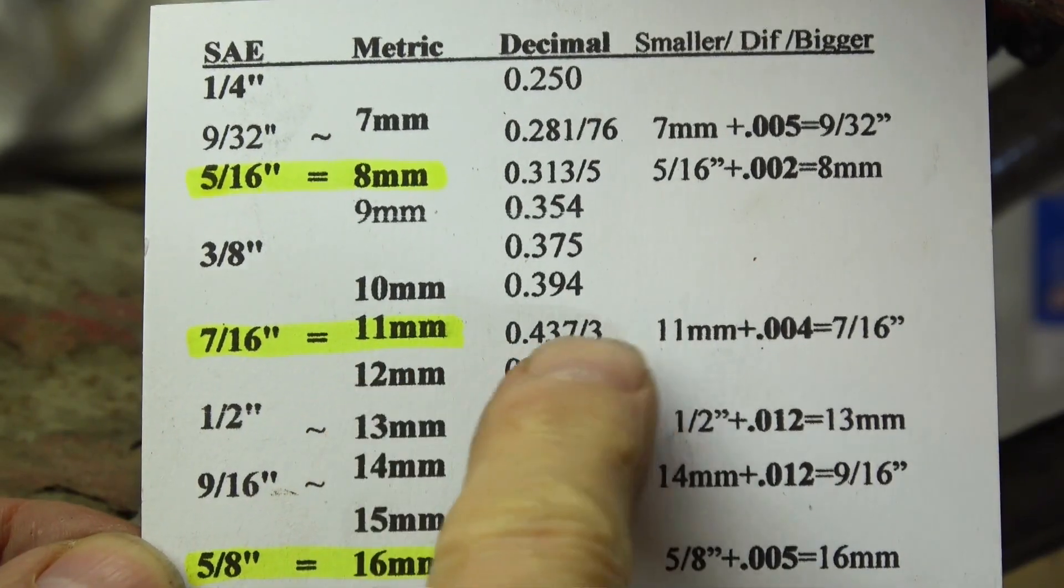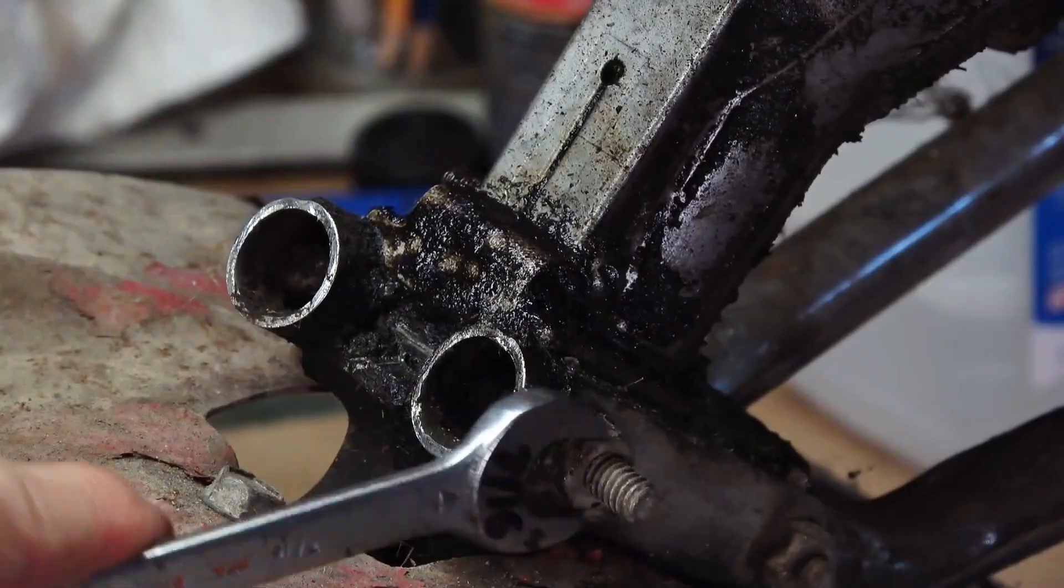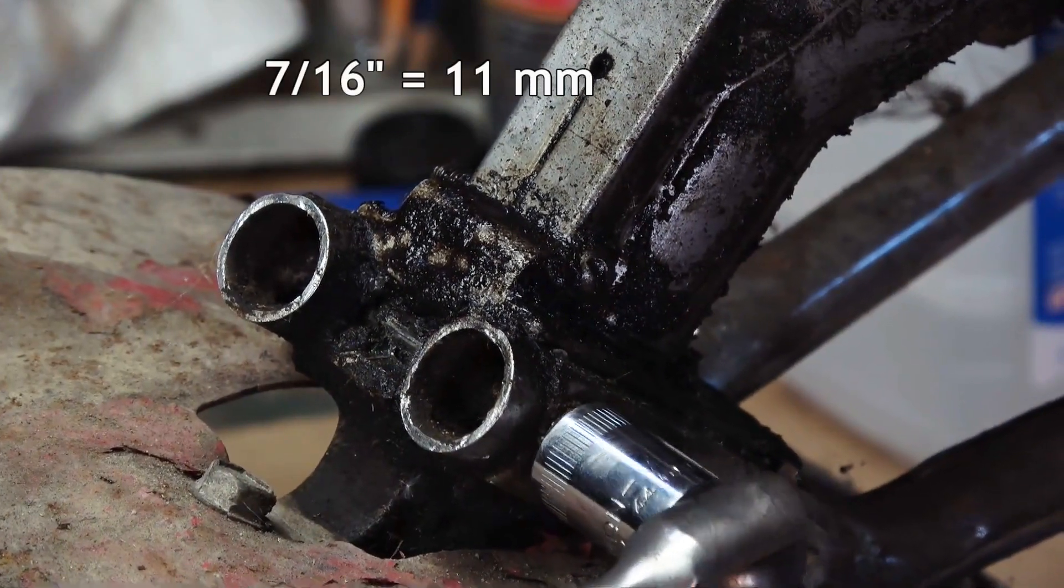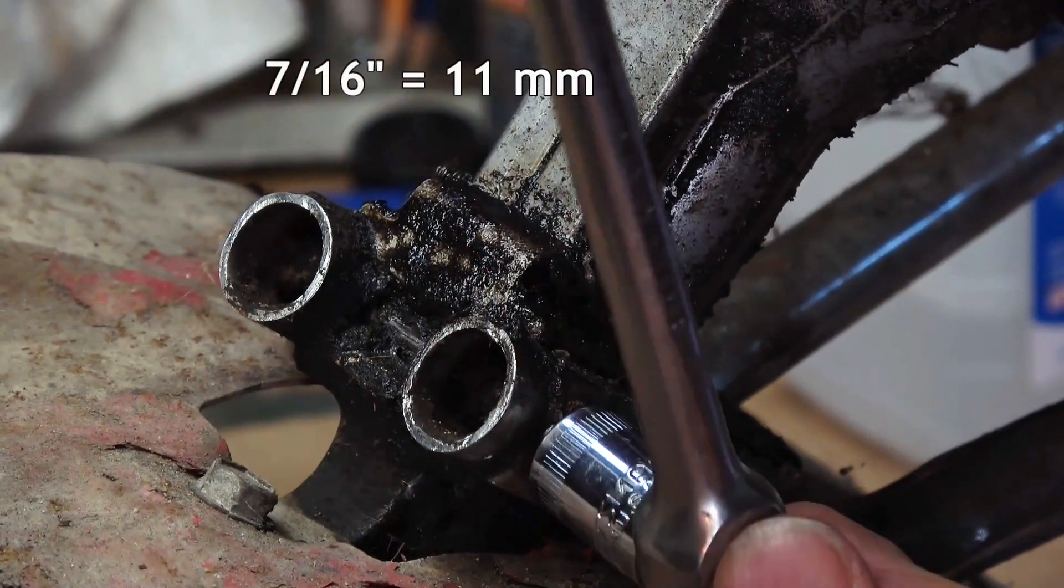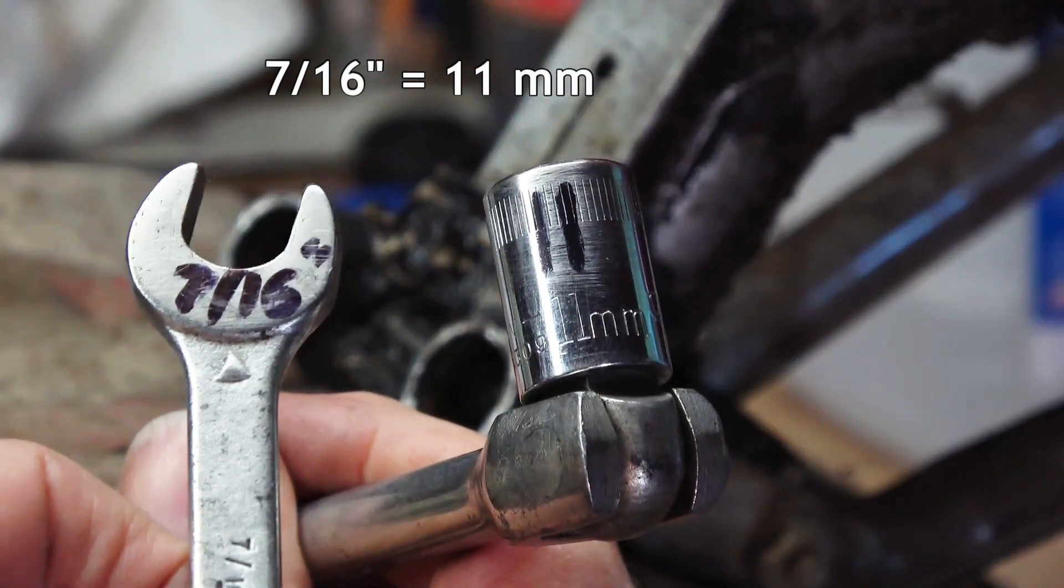7 sixteenths and 11 millimeter are only four thousandths of an inch difference, so they are interchangeable, and either one fits this bolt on my rudder tiller just fine.